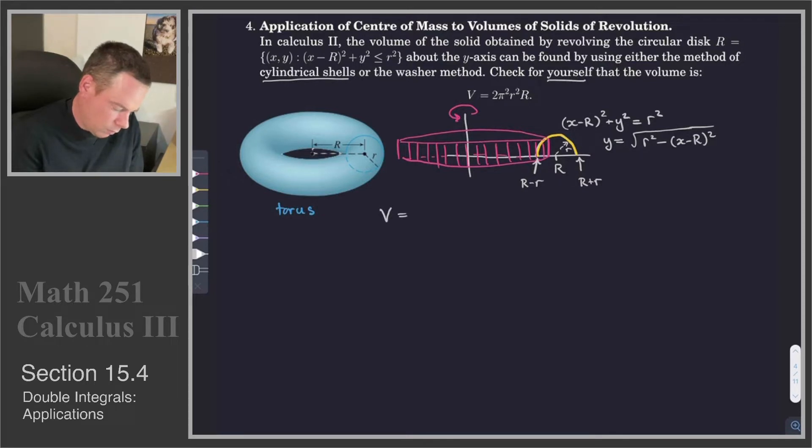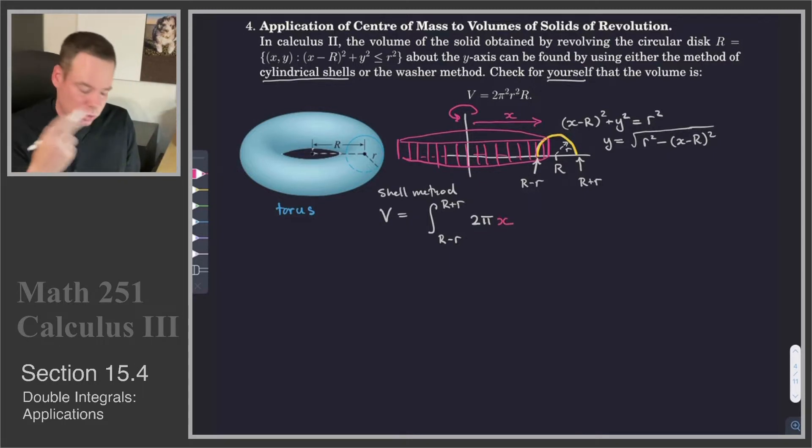So what is our volume? Our volume by the shell method is given by the integral from R - r to R + r of the areas of all these shells. The area of the shell is 2π times the distance the slice is from our axis of rotation, which is x. So that's 2πx times the circumference, and then I multiply by the height: √(r² - (x - R)²) dx.